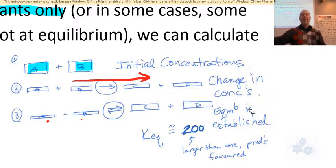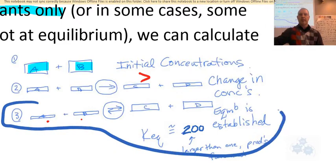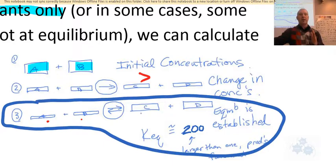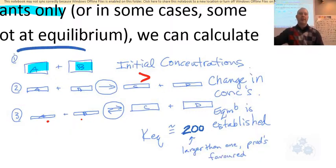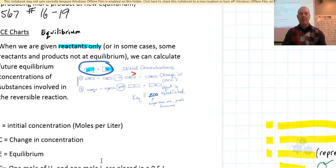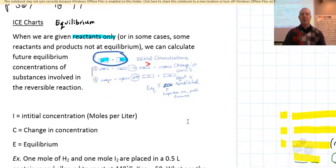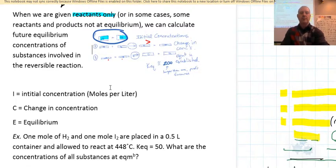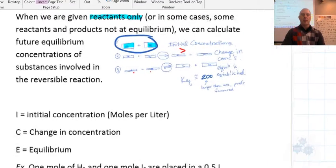Before, we started with the Keq and equilibrium concentrations and found one missing value. Now we're starting from initial concentrations and going to find all concentrations at equilibrium. There's a specific method called ICE charts — I've been using these since high school. They're tried and true, pretty awesome, and easy to work with.